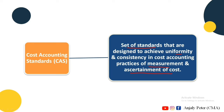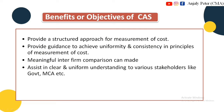The Cost Accounting Standard has a set of benefits and objectives. The first objective is to provide a structured approach for measurement of cost. The second objective is to provide guidance to achieve uniformity and consistency in measurement of cost. The third objective is to provide meaningful inter-firm comparison.